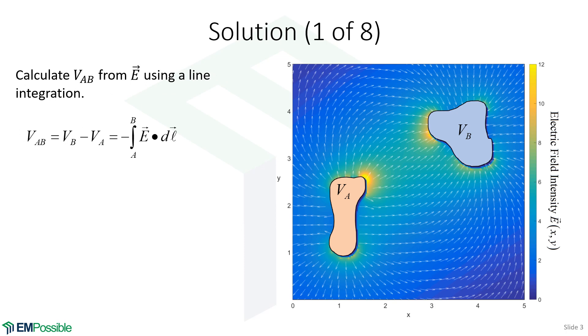To do this, we need to use our line integral. Remember how this is defined: the voltage AB, which is the potential at B minus the potential at A, we find through a line integration of the electric field dot dL. So line integral of electric field from A to B.